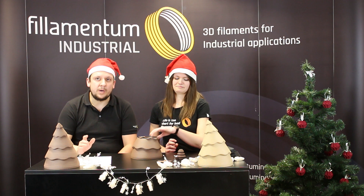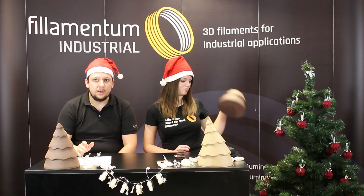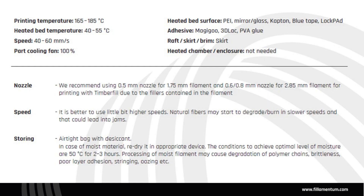The second tip is about speed. Timber fill is better to print at higher speeds than basic PLA — 40 to 60 mm per second. Because timber fill contains real spruce fibers, the fibers can start to degrade or burn under low printing speeds, and this could also lead to jams.